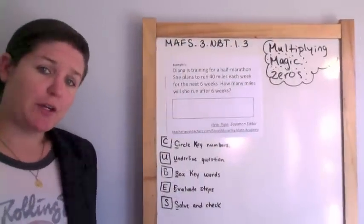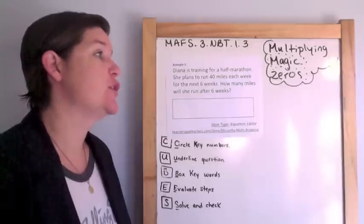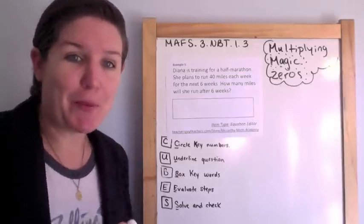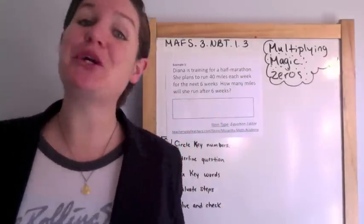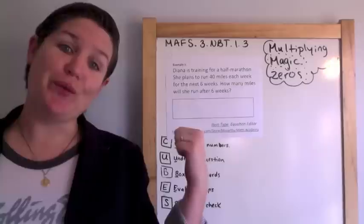We will be multiplying one-digit whole numbers in multiples of 5 or 10. Maths.3.mbt.1.3. Let's cut to the chase — let me teach you. For this benchmark, we are multiplying multiples of 10. I like to call this the 'multiplying magic zeros' standard. Let's get to it.